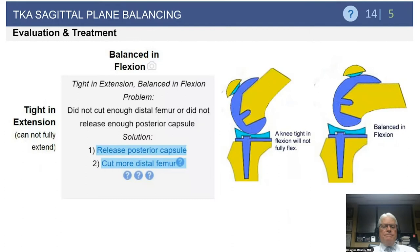What about the knee that is tight in extension and well-balanced in flexion? Here the patient clinically usually has a flexion contracture. The problem in this situation typically is that enough distal femur was not resected, or in some cases the posterior capsule is excessively tight. The solution is to cut a bit more distal femur and/or release the posterior capsule if it is tight.